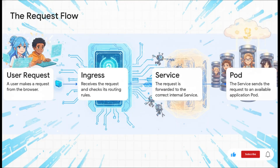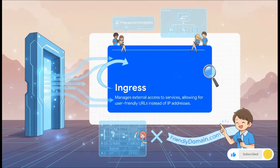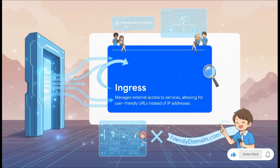Let's trace the journey of a request from a user all the way to our app. It starts with the user, then hits something called an ingress, which points it to the correct internal service, and finally that service routes it to a healthy pod. Think of ingress as the smart front door for your entire cluster — the traffic cop. It looks at the URL coming in, like myapp.com/analytics, and knows exactly which service to send that traffic to. This lets us use friendly domain names instead of ugly IP addresses to reach our apps.